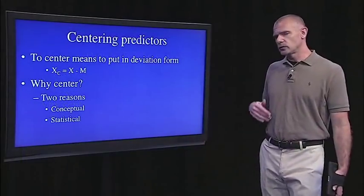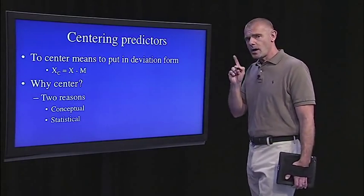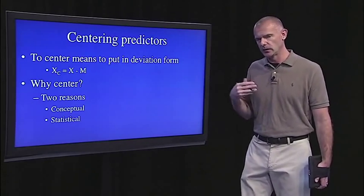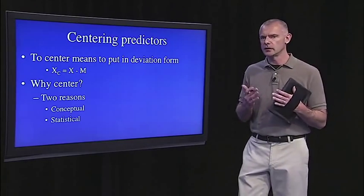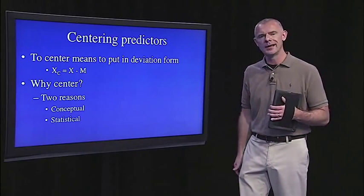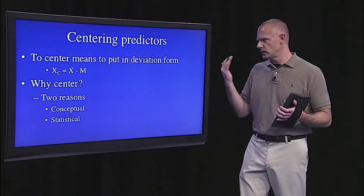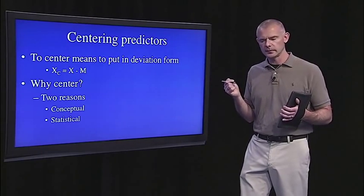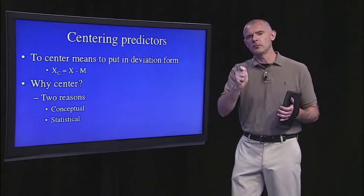The two technical details we need to cover in the context of moderation analyses are: one, centering, and two, dummy coding. You've probably heard about these if you have some exposure to statistics or multiple regression. Centering is real easy — it simply means to put our predictors, our x variables, in deviation form. So for every variable, just take the individual score and subtract the mean. What that does is give us, for every predictor variable, a mean of zero.